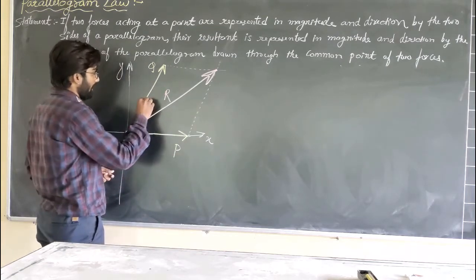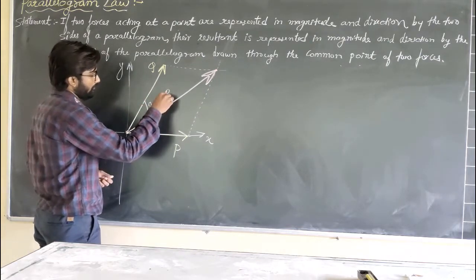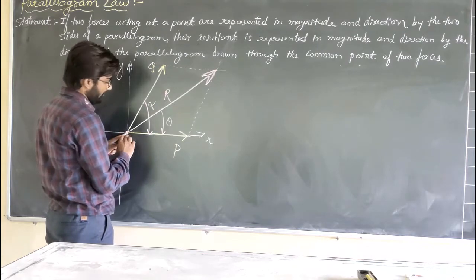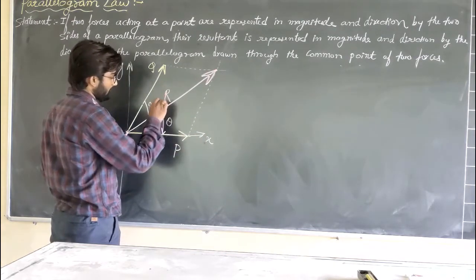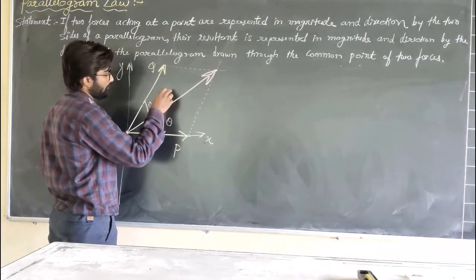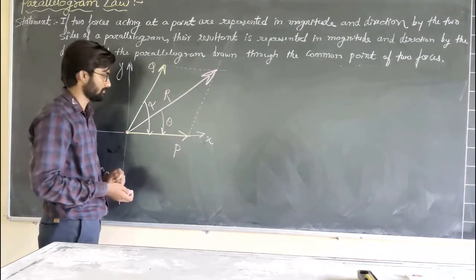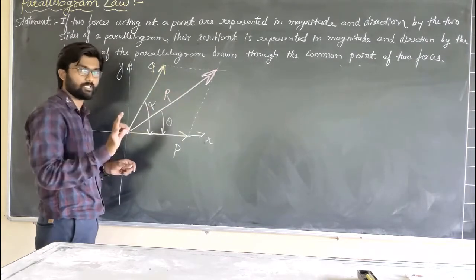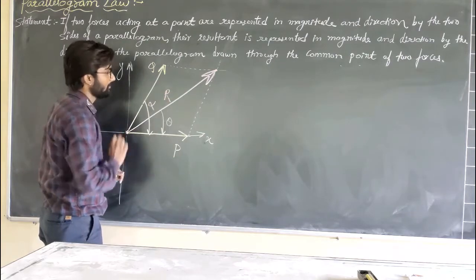Now for some common terms: the angle between the two forces — for which we find the resultant — is called alpha, while the angle between the resultant R and the force P is called theta. Note that in this example P is along the x-axis, but that won't always be the case. So theta is not necessarily the angle of R with respect to the x-axis; theta is specifically the angle between R and P force.